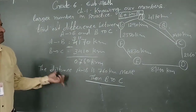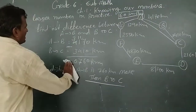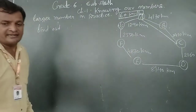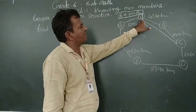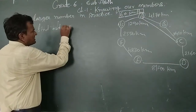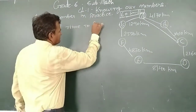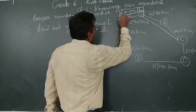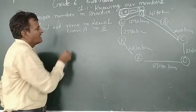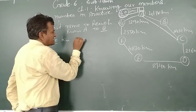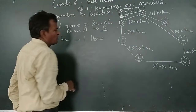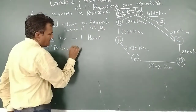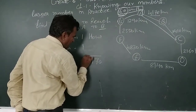Understand? Then one more example: we want to learn how to find the time to reach from A to B. The bus started from A and the speed is 60 kilometers per hour. The distance is 4170 kilometers. So what is the time to reach from A to B? Speed is 60 kilometers per hour, meaning in one hour it covers 60 kilometers. So we write 4170 divided by 60.